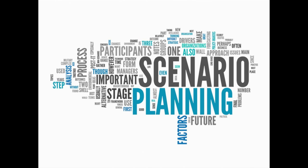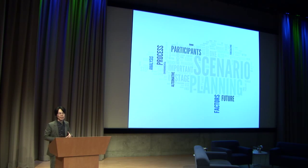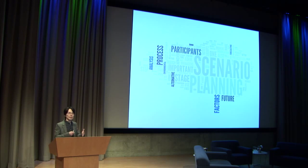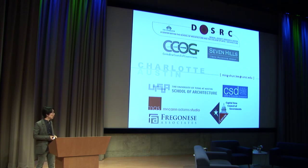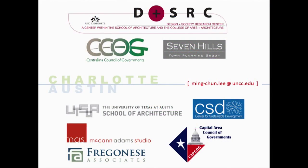To summarize, scenario planning's key focuses on a systematic procedural approach, consideration of broader-scale environmental factors, emphasis on performance assessment, public participation, and promoting alternative change for future-oriented outcomes — all these characteristics together present a clear example of how general design can be done. I want to acknowledge our institutional and private sector partners: for the Charlotte project, the Design and Society Research Center at UNC Charlotte and Seven Hills Town Planning; and for the Austin project, the Center for Sustainable Development at UT Austin, McKinney-Adams Studio, and Fregonese Associates. Thank you very much.